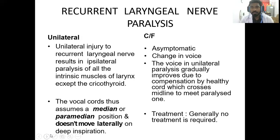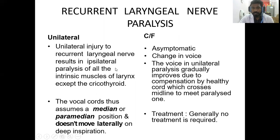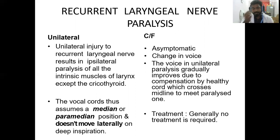Moving on to recurrent laryngeal nerve paralysis — it can be unilateral or bilateral. Unilateral injury to the recurrent laryngeal nerve results in ipsilateral paralysis of all the intrinsic muscles of the larynx except the cricothyroid, which is supplied by the superior laryngeal nerve. When there is a unilateral paralysis of the recurrent laryngeal nerve, the vocal cords assume a median or paramedian position and do not move laterally on deep inspiration.